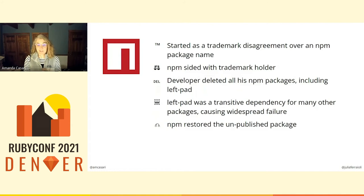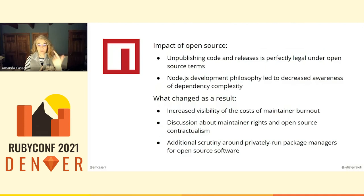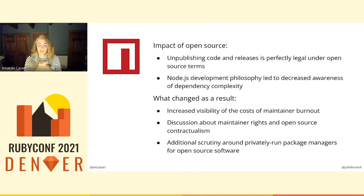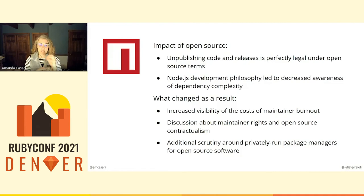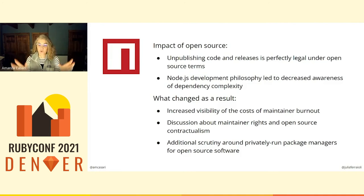How is this a black swan event? With our hindsight glasses, we can clearly see that unpublished code and releases are perfectly legal to remove. You can unpublish code and releases under open source terms. This also raises nuances around creating things and building them as part of a larger ecosystem. The question becomes: what do we owe to each other, as well as what are our personal rights? The Node.js development philosophy did lead to decreased awareness of dependency complexity, because of the distributed and complex nature of Node.js where packages are tiny little packages which may not understand how they've emerged as part of a larger whole. This in fact created a system where cascading failures could happen.